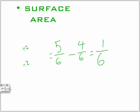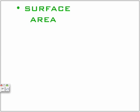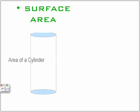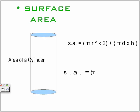Now let's go to the surface area. To calculate the surface area, you have to multiply pi times radius squared times 2 plus pi times diameter times height.